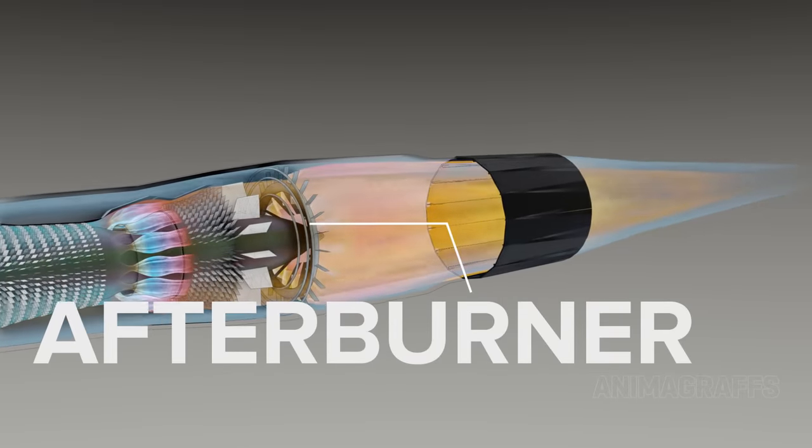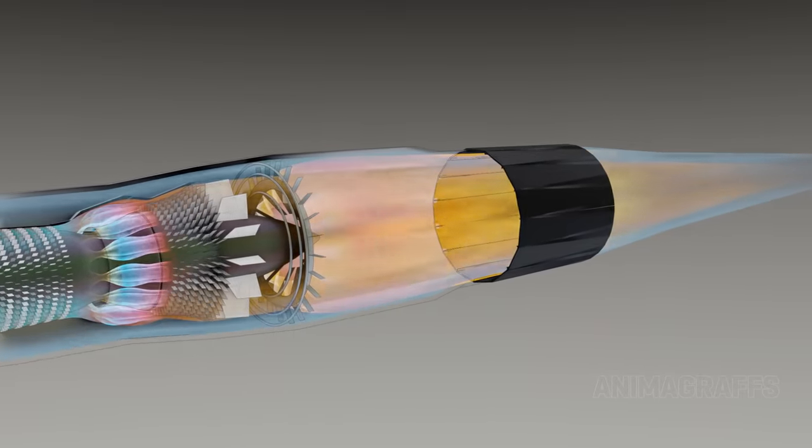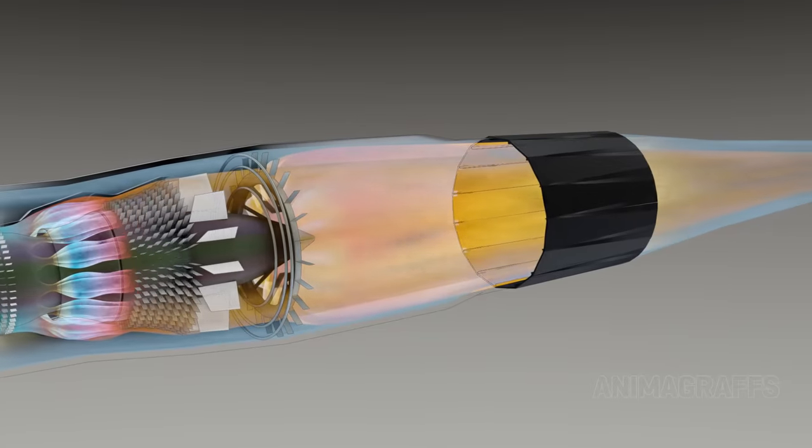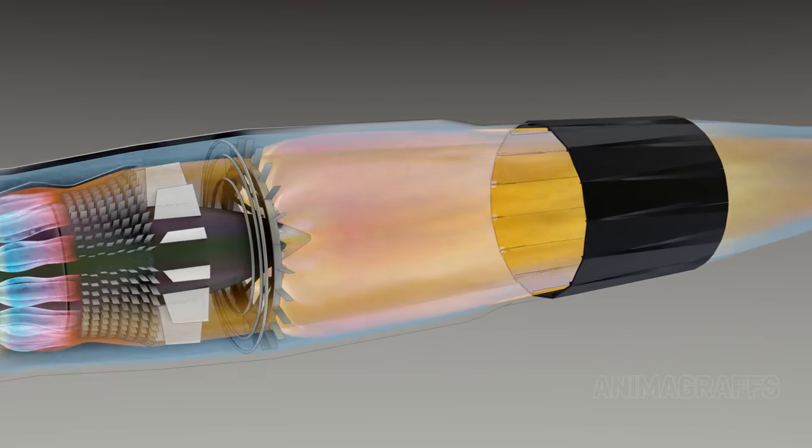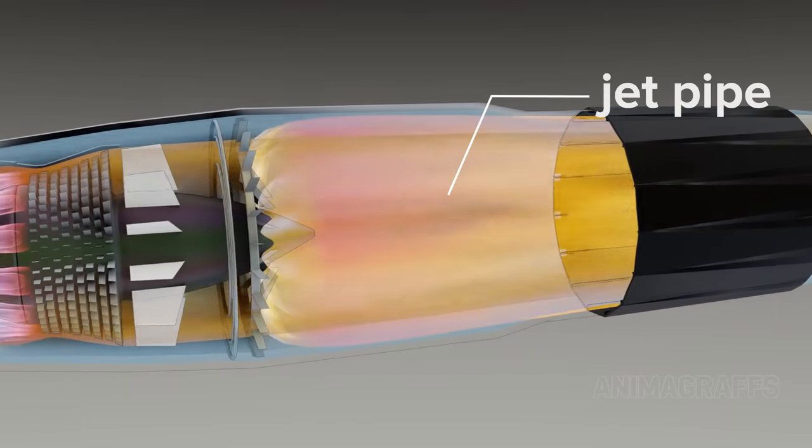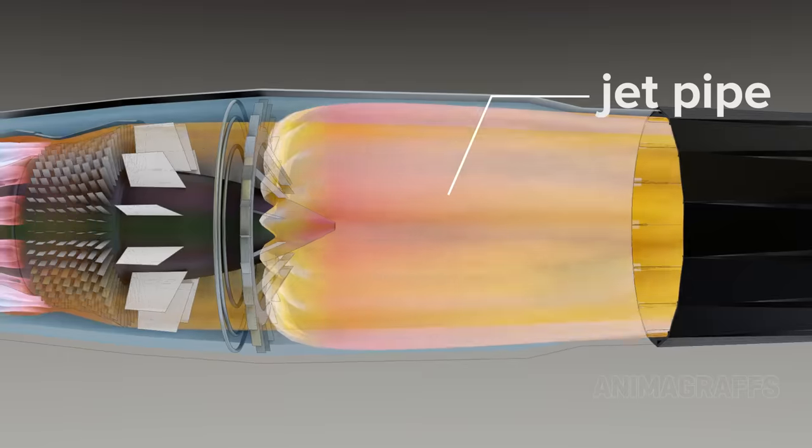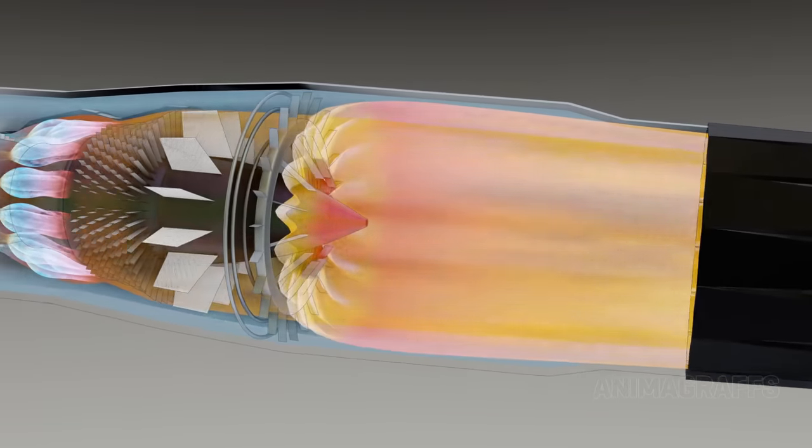Afterburner. High-performance engines may have afterburner capability. Additional fuel is sprayed into a jet pipe section where it mixes with exhaust gas and is ignited, producing a second stage of combustion.